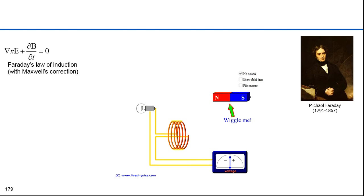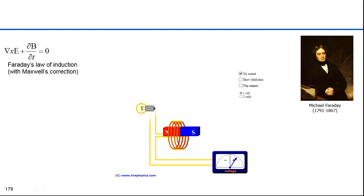The second equation, discovered by Faraday, shows that a time-varying magnetic field produces an electric field or an electromotive force. If you move a magnet through a coil, it generates a current. This is the basis of electric motors and generators.